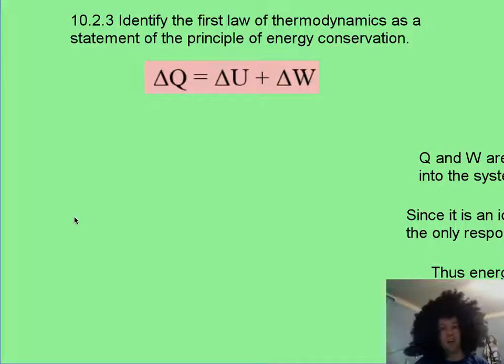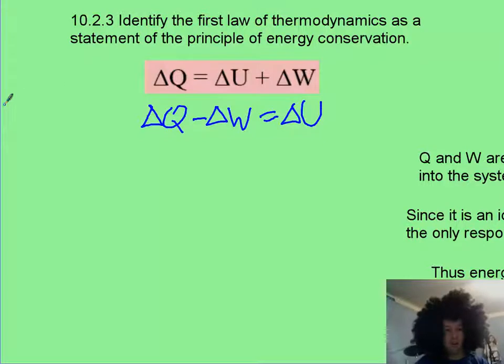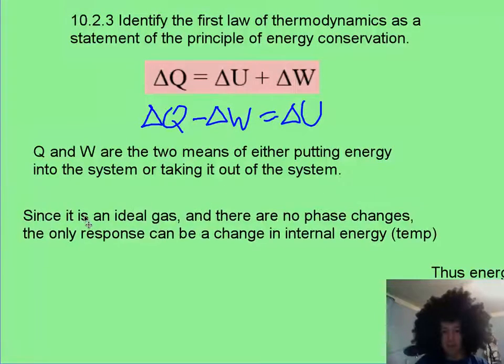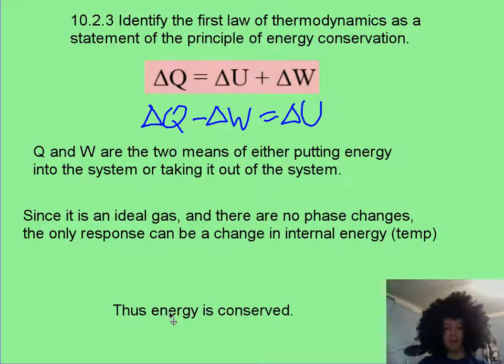This first law of thermodynamics exists because of energy conservation, and I think sometimes it can be better understood by writing it like this. Now, Q, the heat, and W are your two means of either putting energy in by heating it, or maybe contracting it and putting work into the system, or working on the system. Now, if you do that, it's an ideal gas. We're going to assume it's not going to change phase. And if you put heat in, maybe you're going to make the internal energy, this temperature, go up. Or maybe it's going to expand enough that it won't make that internal energy go up. But basically, whatever you do with the heat, whether you put it in or out, and whatever happens with the work, whether it expands or contracts, the combination of those two are going to lead to a change in internal energy. And those always have to balance each other out, and so energy is conserved.